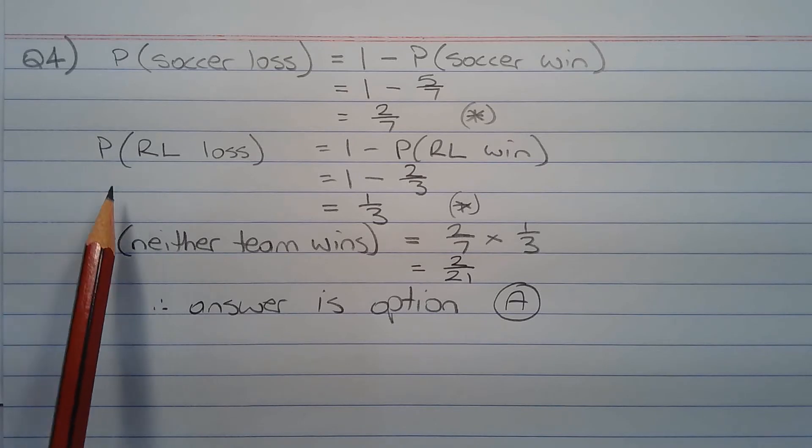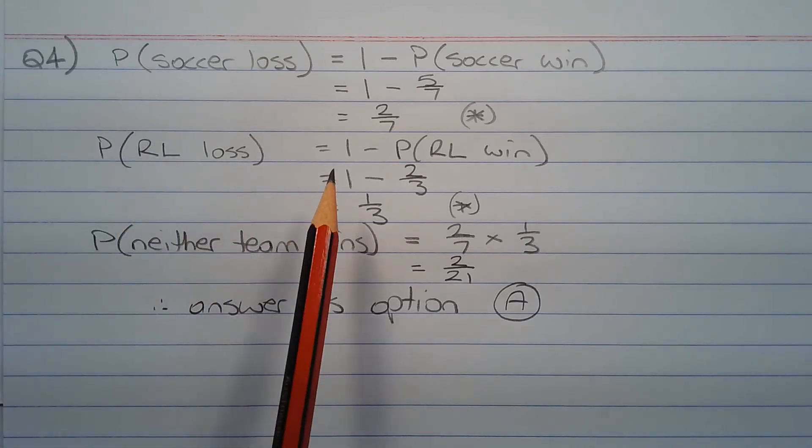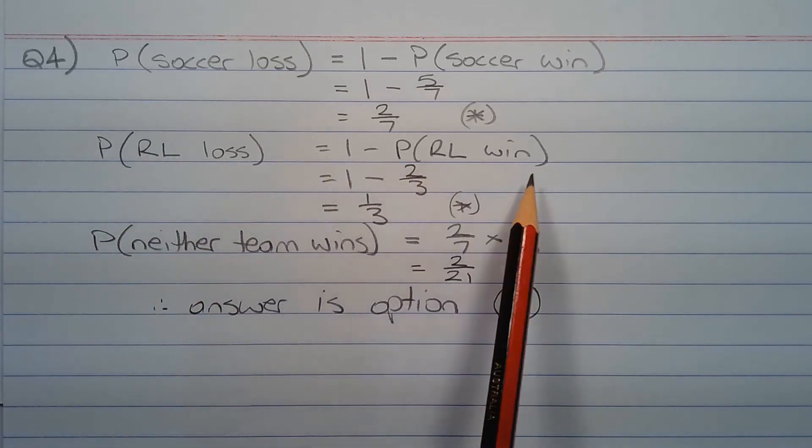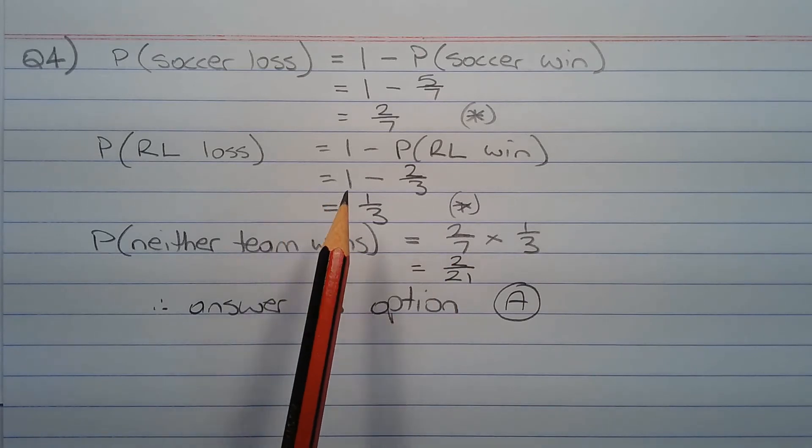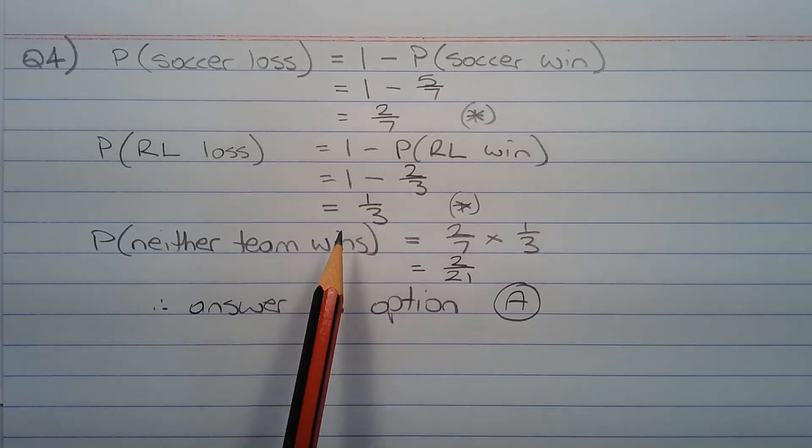Now the probability of losing the rugby league game is equal to 1 minus the probability of winning the rugby league game, which equals 1 minus 2 over 3, which equals 1 over 3.